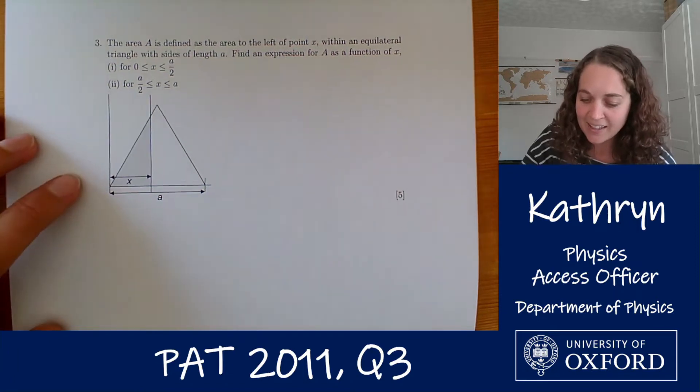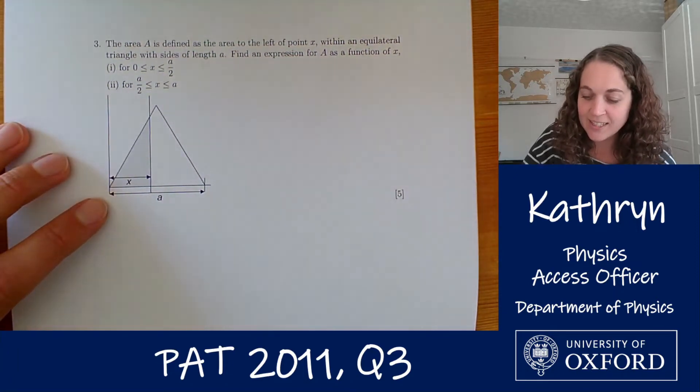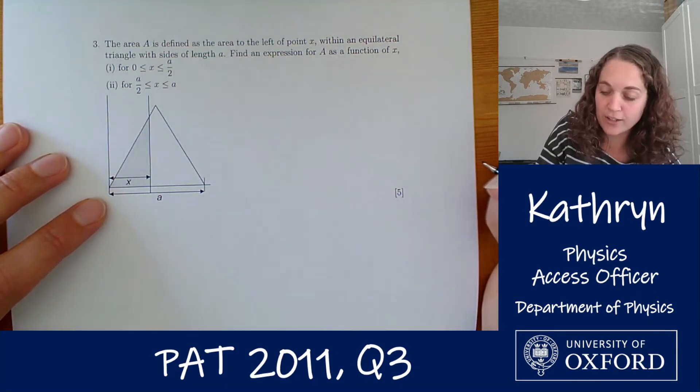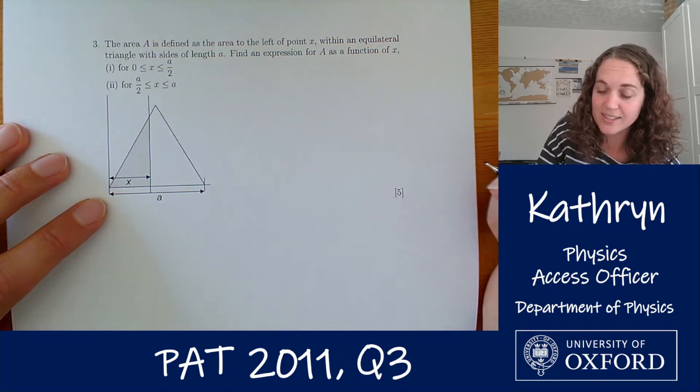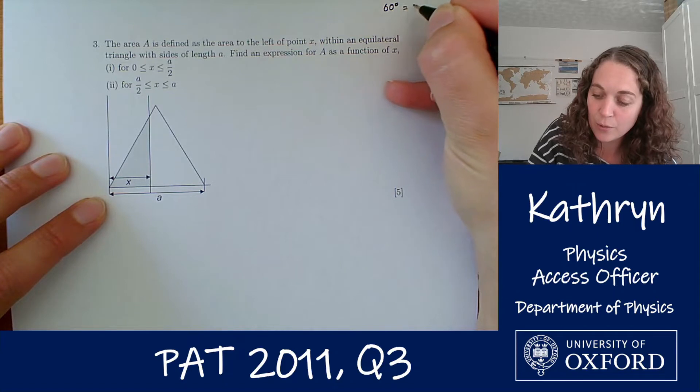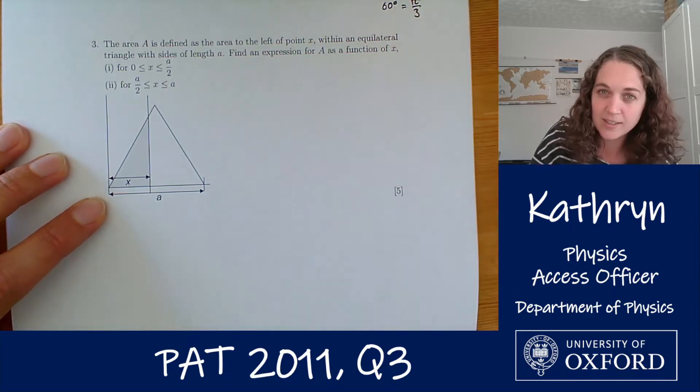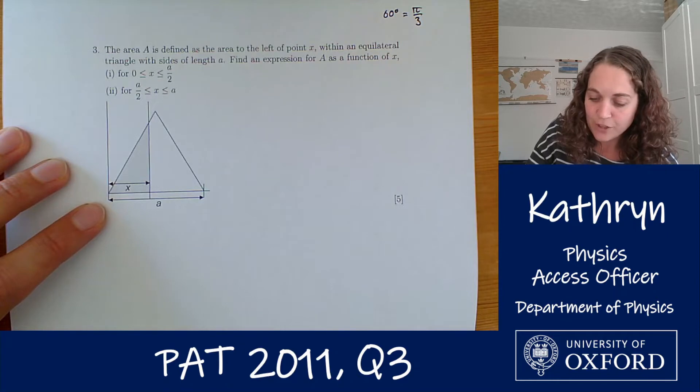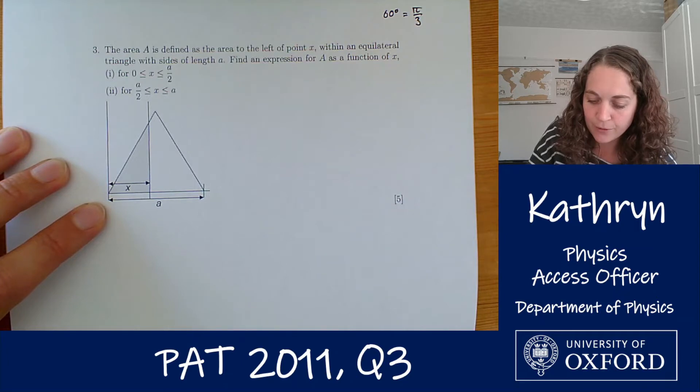The area A is defined as the area to the left of point X within an equilateral triangle of sides length A. Equilateral triangle, we're immediately thinking all three sides are the same and all three angles are 60 degrees or pi by 3 radians. Find an expression for A as a function of X for X is between 0 and A over 2 and for X is between A over 2 and A.